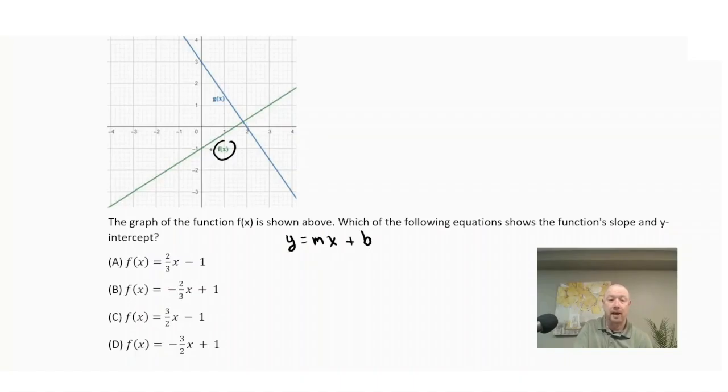So looking at f(x), I can see that it crosses at negative one. So my b value must be negative one. So that's going to eliminate choice B and choice D, which have positive one as their y-intercept. So we just need to figure out the correct slope here. Is the slope two-thirds or is the slope three over two?